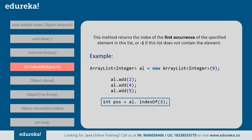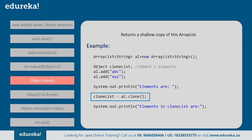Next, indexOf returns the index of the first occurrence of the specified element in the list. If that element is not present, it returns -1. For example, if you want the index of 5, it will return index 2 (a[1] or a[2]). But if you try to find the index of 3, which is not present in the ArrayList, it returns -1. Next, the clone method returns a copy of the ArrayList — calling this method clones the entire ArrayList. For example, if you add two elements and clone the list, it will return all elements present in the ArrayList.